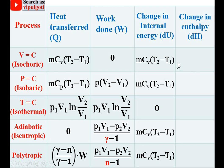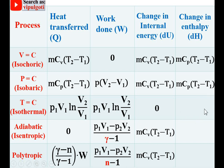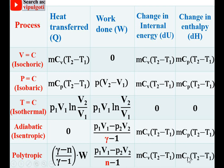For change in enthalpy, it is always mCpΔT where specific heat is at constant pressure — this equation is the same for all non-flow processes. For the isothermal process, since ΔT = 0, enthalpy change is also 0. For adiabatic and polytropic processes it is mCp(T2 − T1). These are the very important formulae you must remember to solve problems related to non-flow processes in the examination. Thanks my dear friends.